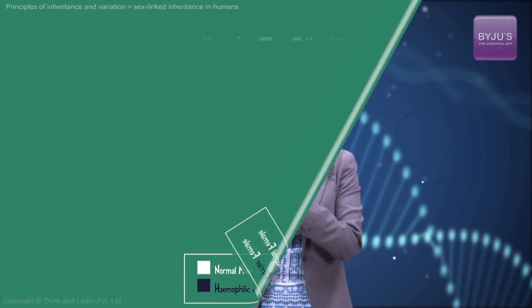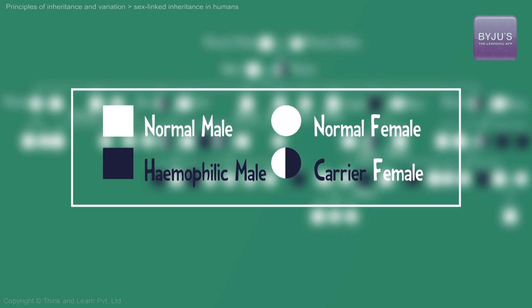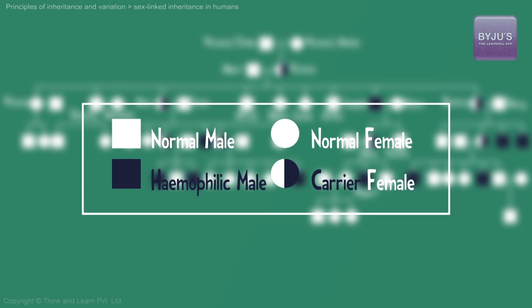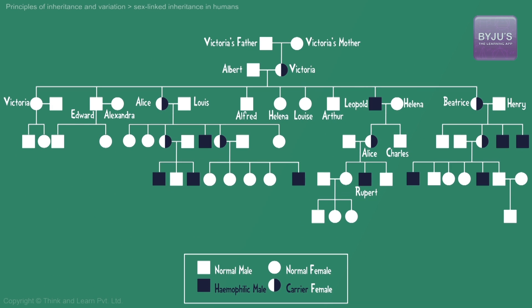To understand how hemophilia is inherited, let's take a look at the royal family tree. First, let's understand what the symbols stand for. The circle stands for females, and squares stand for males. A half-circle colored in black stands for a carrier female, and a black square stands for a male affected with hemophilia. A normal male and a normal female have no color. Now, Queen Victoria was a carrier of hemophilia. She married her first cousin Prince Albert and they had nine children. Of their children's genetic history, you can see that two daughters ended up being carriers and one son had hemophilia.